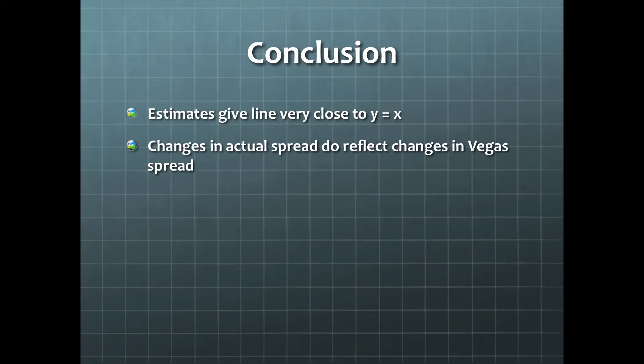Still, the estimates gave us a line that is very close to the identity line, y equals x. The estimated mean spread is very nearly the Vegas spread. So we can say that changes in the actual spread do reflect changes in the Vegas spread. This is an interesting result considering that Vegas spreads are set solely for betting purposes, not for prediction purposes. Thanks for watchin'.